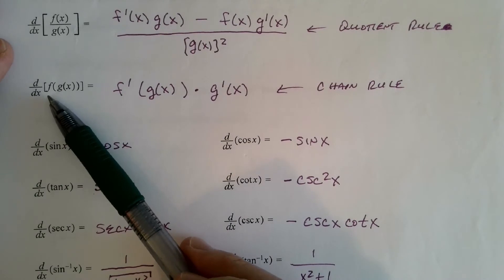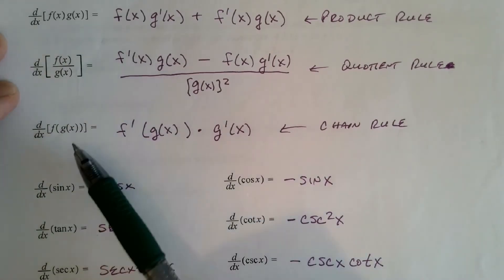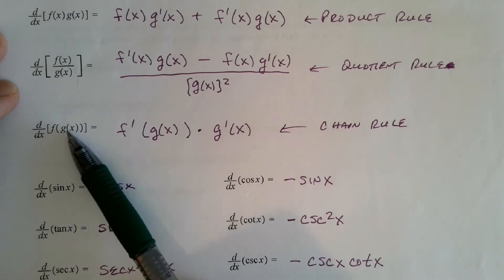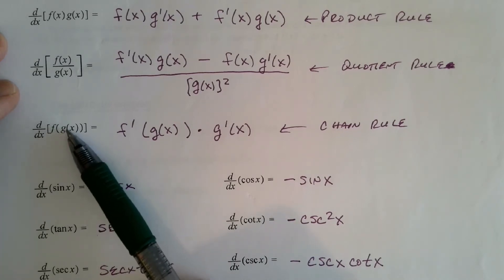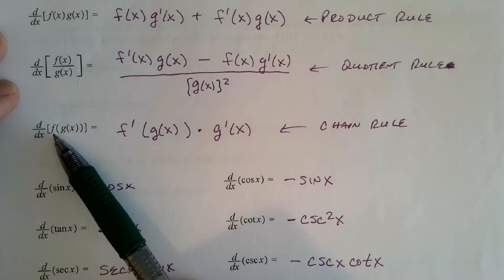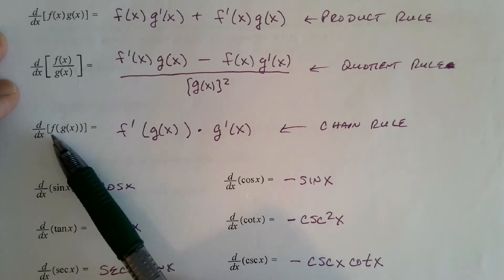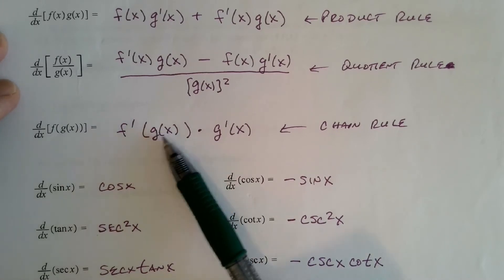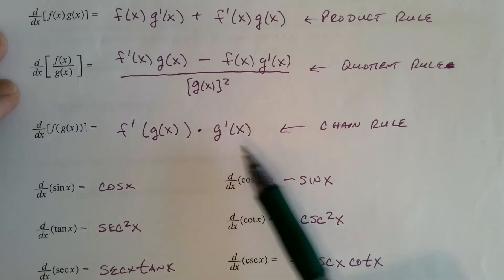Very important: the chain rule. This is a composition — notice this is not a product; it's not f of x times g of x. This is f of g of x. G is the inner function; f is the outer function. We plug the output of g into f. The derivative of f of g of x is the derivative of the outer function f evaluated at the inner function, times the derivative of the inner function. That's the chain rule.